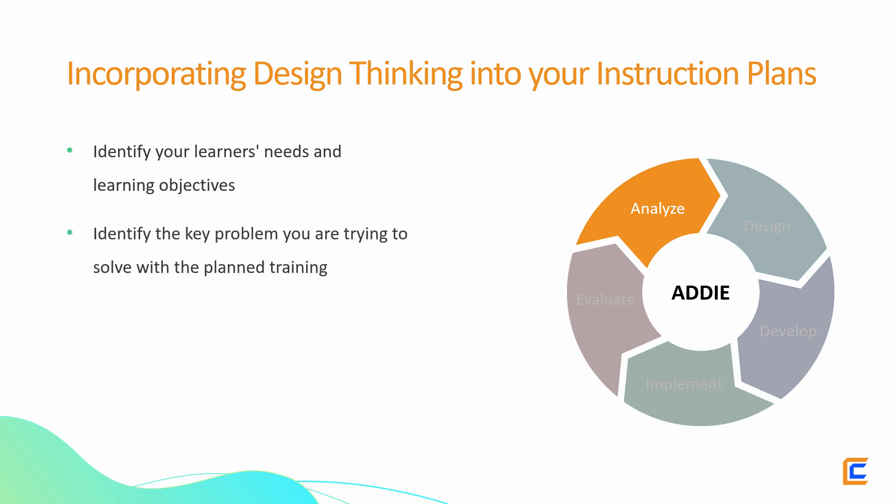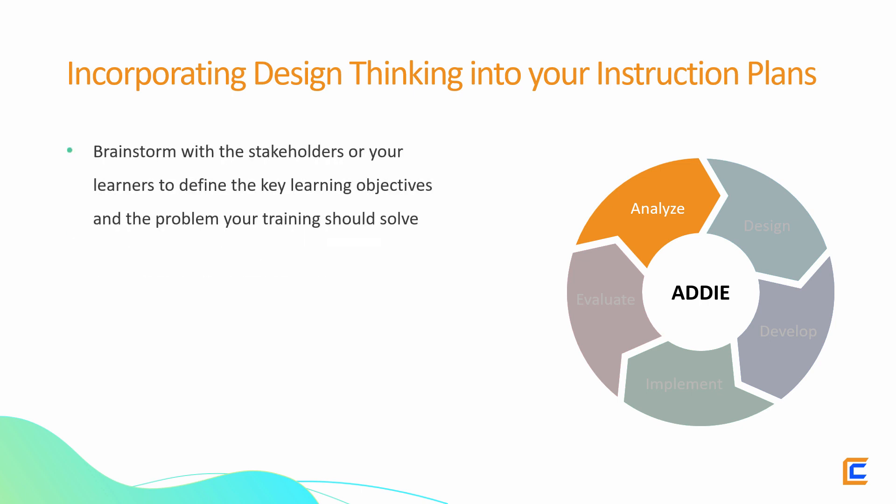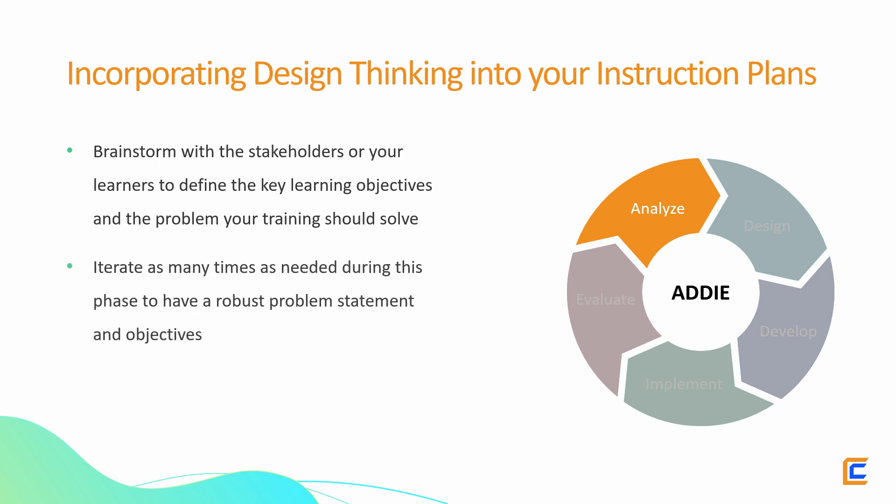After you zero in on the problem, define the needs and learning objectives. Brainstorm with the stakeholders or your learners to define the key learning objectives and the problem your training should solve. Iterate as many times as needed during this phase to have a robust problem statement and objectives. These will be used during the rest of your course design and development.